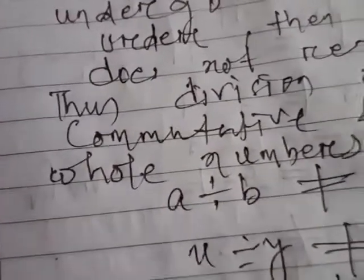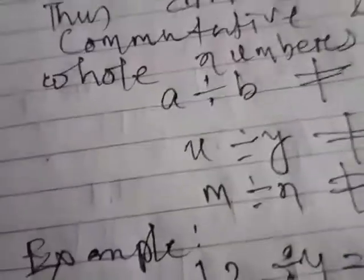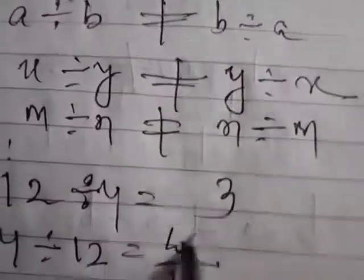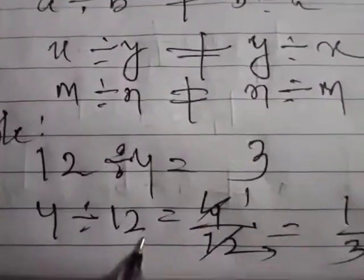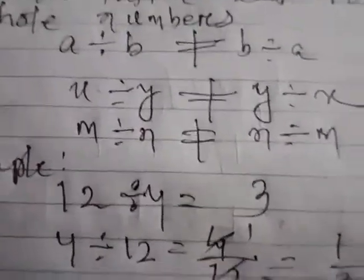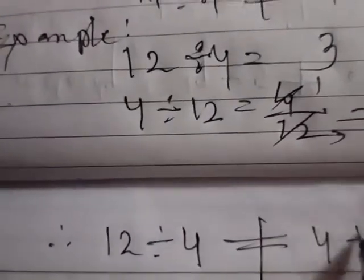For example, 12 divided by 4 equals 3. Now 4 divided by 12 — we can write it as 4 upon 12, which simplifies to 1 by 3. So 12 divided by 4 gives 3 and 4 divided by 12 gives 1 by 3 — they are not the same. Hence 12 divided by 4 is not equal to 4 divided by 12. Division does not obey commutative law.